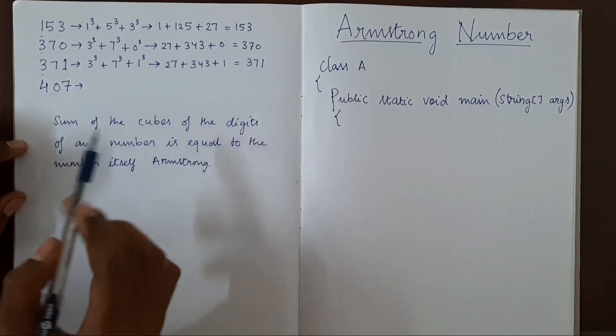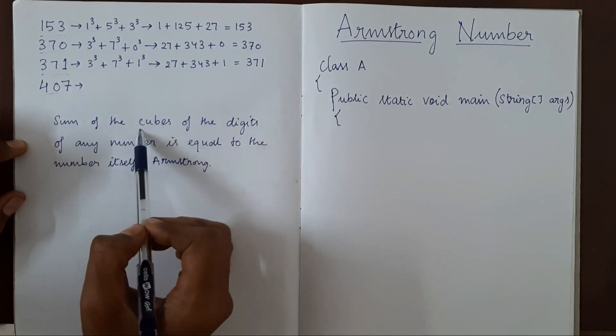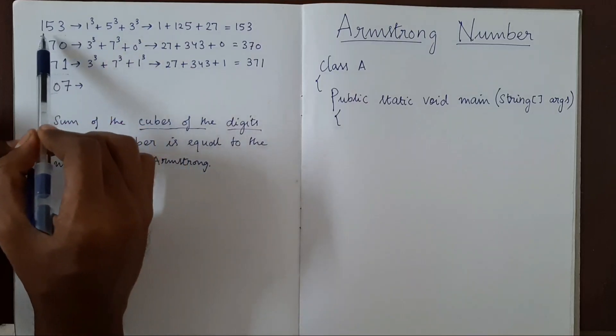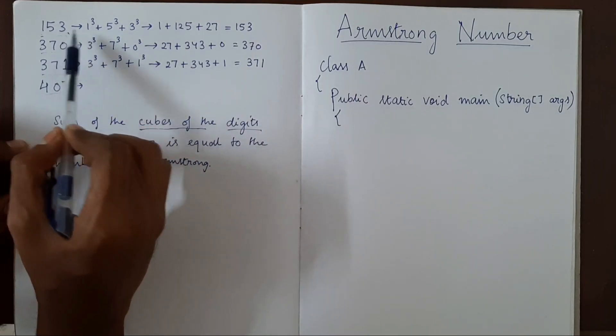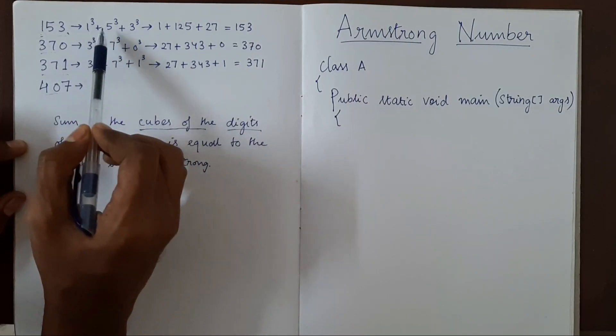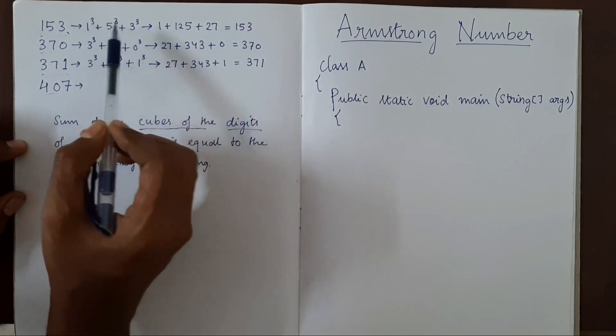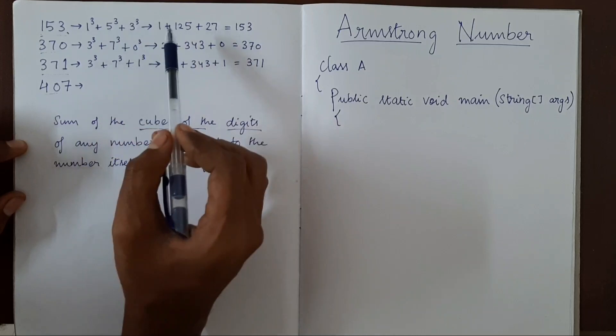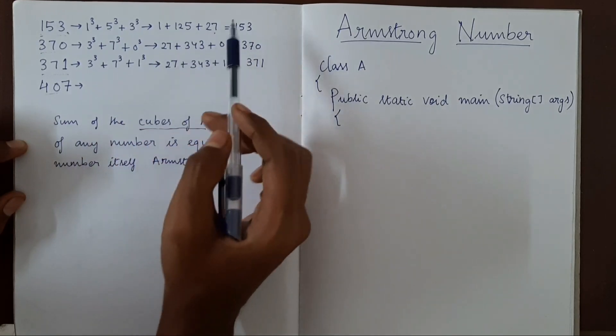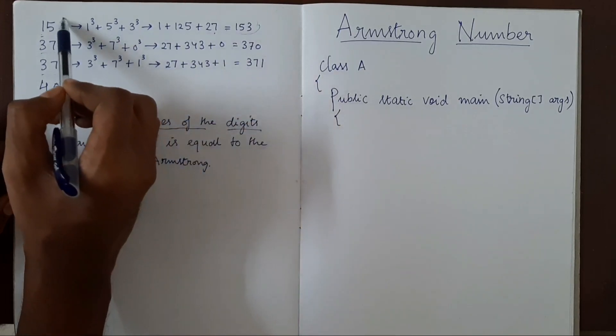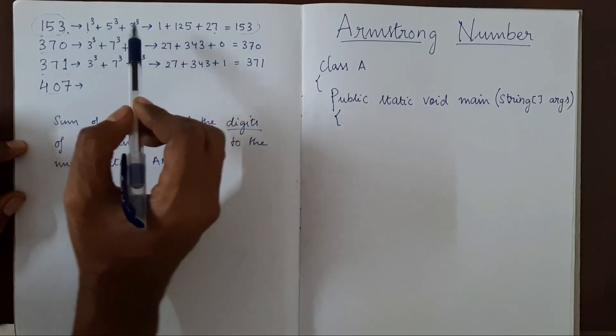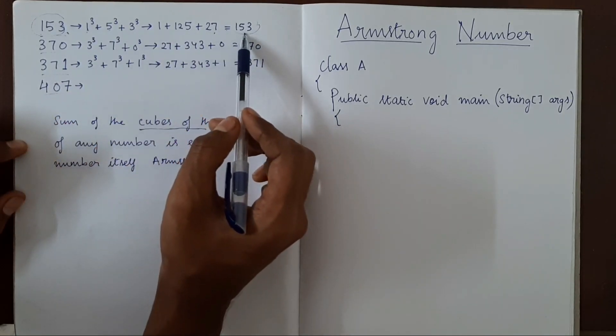Let me explain the cubes of the digits. So this is 153. We are taking out each digit 1, 5, 3 and cubing it, and adding it up. So it will result in 153 itself. 1 cube, 5 cube plus 3 cube is equal to 153.